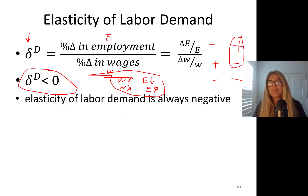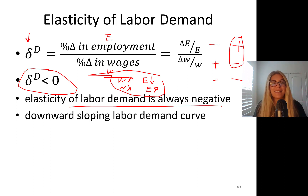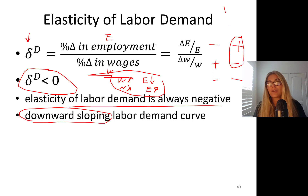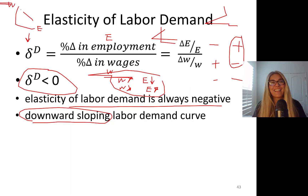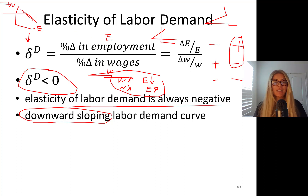Elasticity of labor demand is always negative and characterizes the downward-sloping demand curve. On the graph, the x-axis is employment and the y-axis is price of labor — wages. This is the long-run labor demand curve.